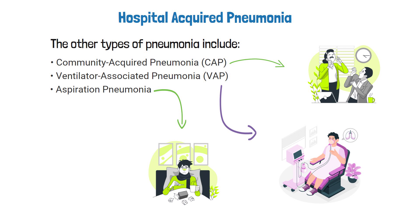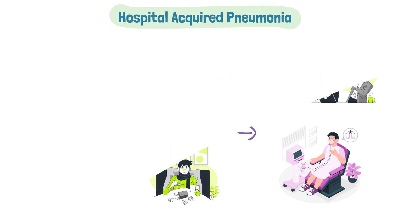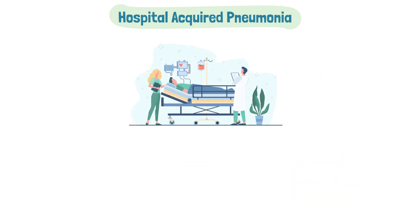For this video we're focusing on hospital acquired pneumonia. For it to classify as this type, the patient must acquire the infection more than 48 hours after being admitted to the hospital. This is how we can differentiate it from community acquired pneumonia.